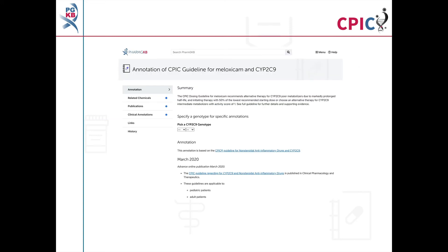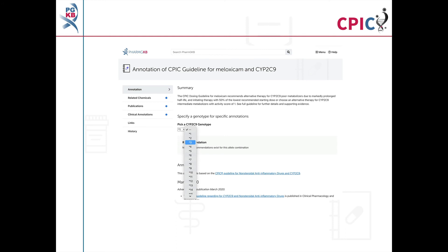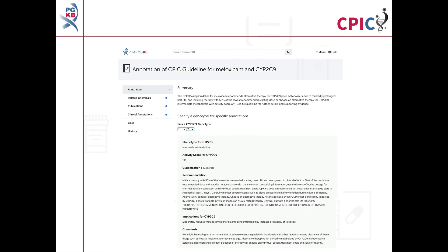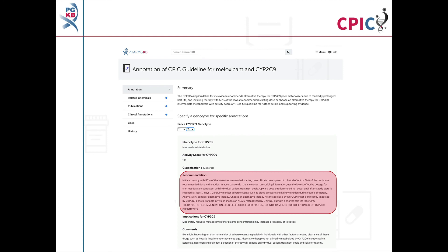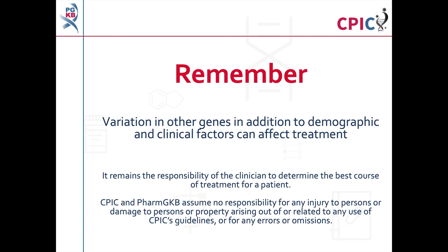This guideline has been annotated on the PharmGKB website, which includes a drop-down menu where an activity summary can be given for specific combinations of alleles. The activity summary includes implications for the patient's response to meloxicam, the appropriate dosing recommendation for the specific metaboliser phenotype, and the strength of that recommendation. Remember that variation in other genes, in addition to demographic, clinical factors, and concomitant medications, can affect treatment. It remains the responsibility of the clinician to determine the best course of treatment. CPIC and PharmGKB assume no responsibility for any injury to persons or damage to property arising out of any use of CPIC's guideline, or for any errors or omissions.